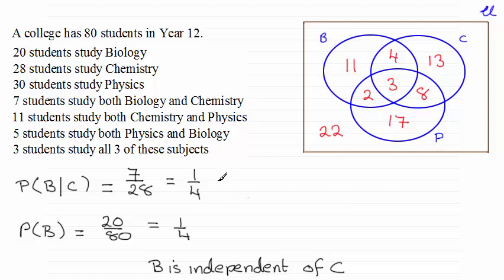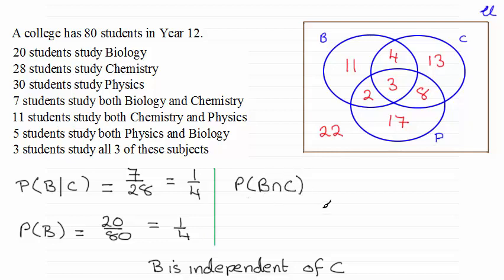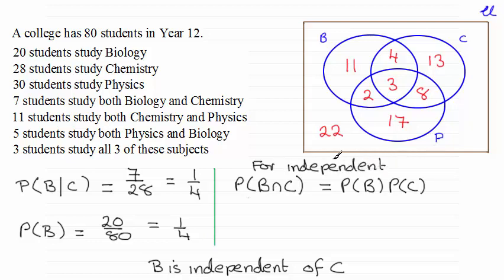Another way of doing this — which I would generally use when working with probability tree diagrams, but you can still apply it here — is to work out the probability of both events happening, that's B and C, B intersected with C, and check whether it equals the probability of B times the probability of C. This rule is only true for independent events.